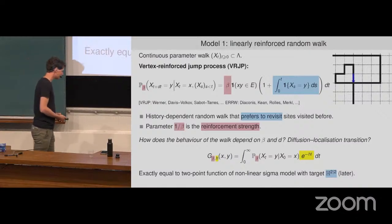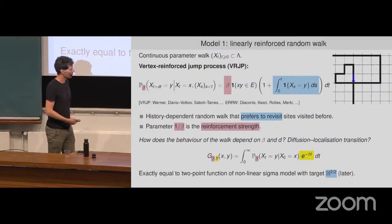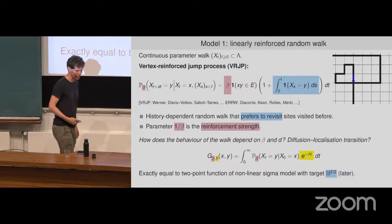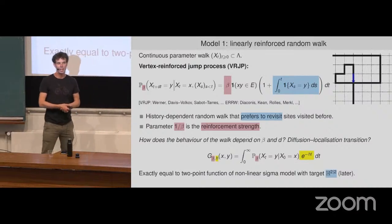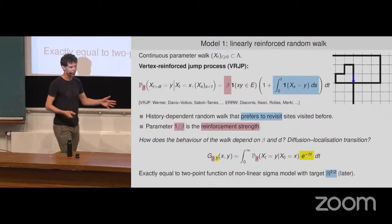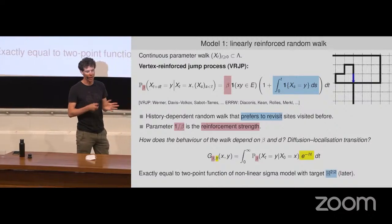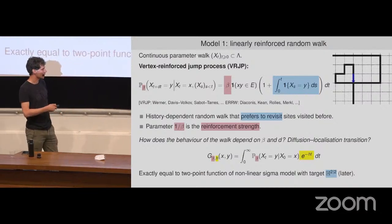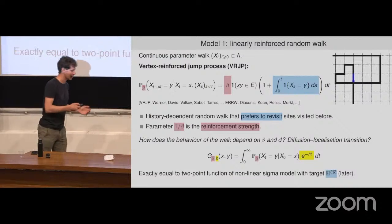This relation is exact. The H^{2|2} model — the hyperbolic superplane — was introduced by Martin Zirnbauer, who was interested in the Anderson transition. He introduced this model as a simplification of the models that arise when trying to understand the Anderson transition. He basically removed the variables that, based on his physical understanding, he was sure were irrelevant for the transition. He removed those, got a simpler model — a supersymmetric space — and that's how this model was conceived. The connection with these walks came later.